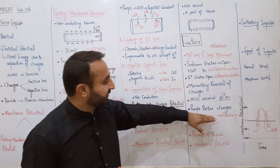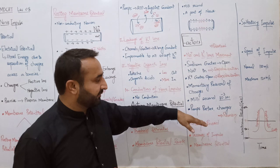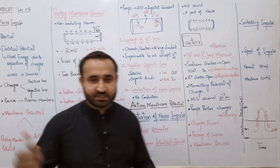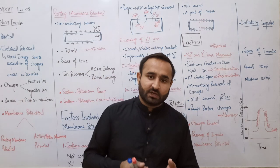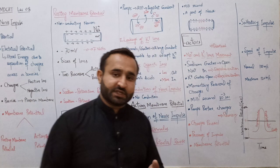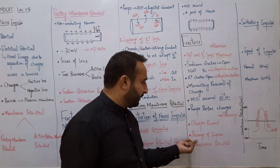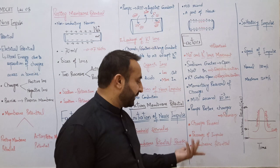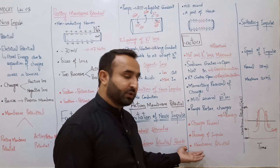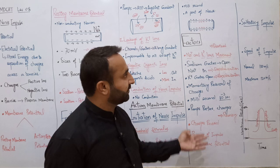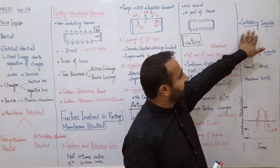Recovery میں دوبارہ سے باہر positive اور اندر negative ہو جاتا ہے - جیسے ہم نے پہلے دیکھا ہے: sodium-potassium ions movement، leakage of potassium ions اور organic negative ions وغیرہ۔ پھر دوبارہ سے impulse منتقل ہو سکتی ہے اور membrane potential دوبارہ reverse ہو جائے گا۔